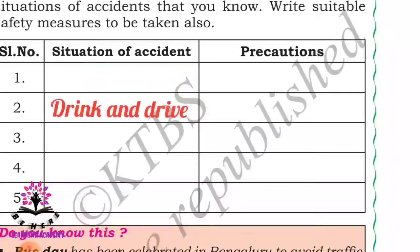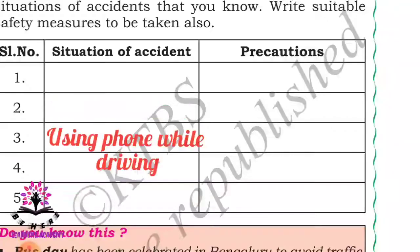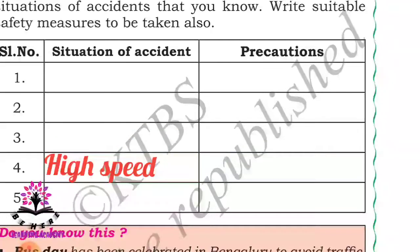Second situation: drink and drive - if we drink and then drive, there are chances of accident. Precaution: avoid intake of alcohol when you have to drive. Third: using a phone while driving causes accidents. Fourth: high speed can also be dangerous and may cause accidents.